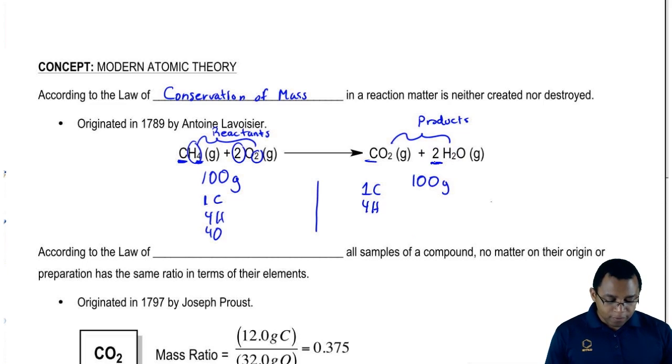Then this two gets distributed. We have two times one, we have two oxygens here plus another two oxygens here. We have four oxygens total.